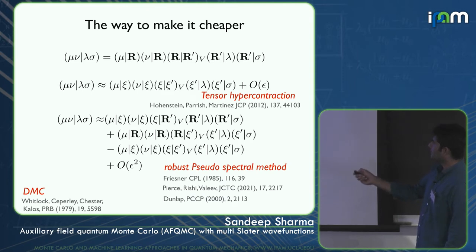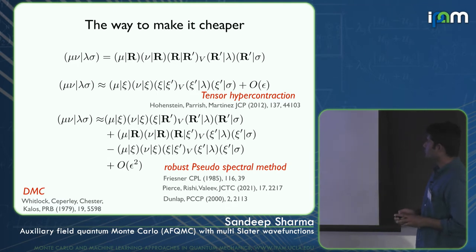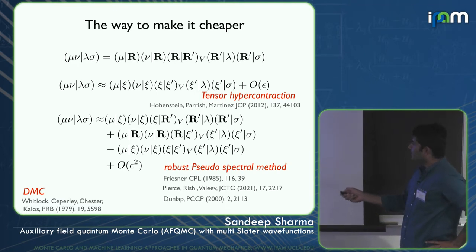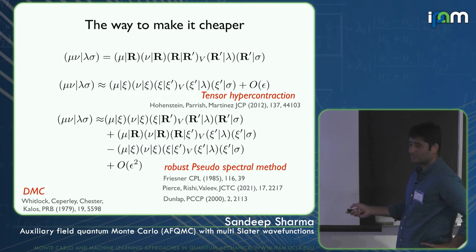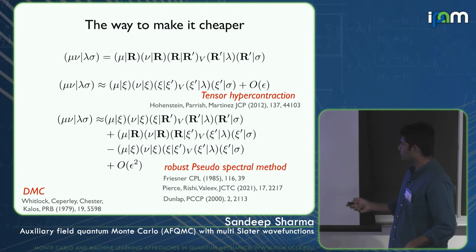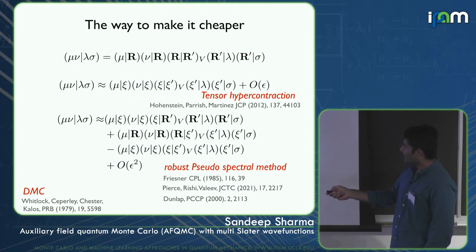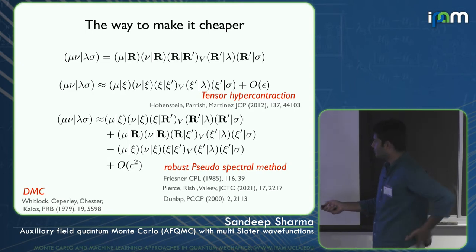The first approximation is called tensor hypercontraction, introduced by Todd Martinez. Applying it on only one side corresponds to pseudo-spectral methods, introduced by Rich Friesner back in 1985. This robust idea is also used in the context of density fitting — Dunlap introduced it in 2002 — and for calculating properties in DMC, going back to work from 1979. It's a very old but useful idea.